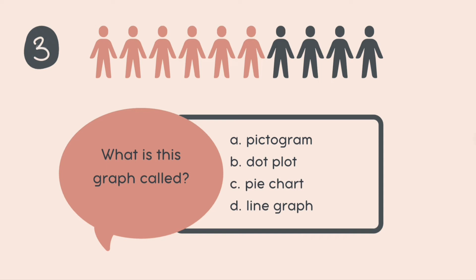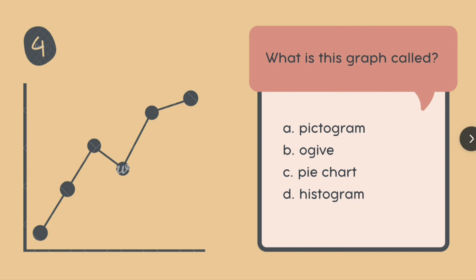Moving on. What is this graph called? I can see that there are a lot of dots and those dots are connected with lines and the entire thing, entire setup is arranged in a graph. It has two axes. So what would this be? Is it a pictogram? Is it an ogive, pie chart or a histogram? What do you think this would be called?